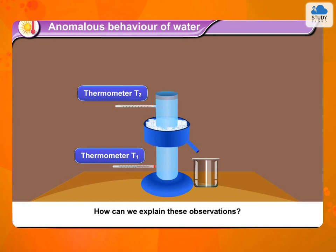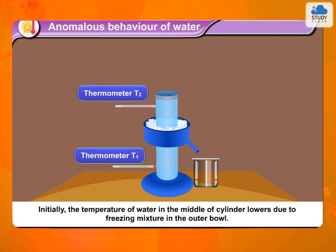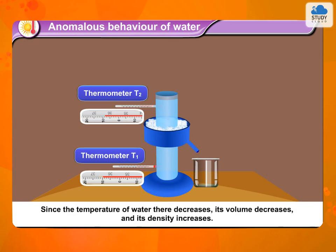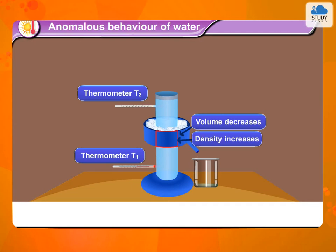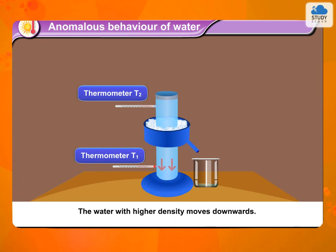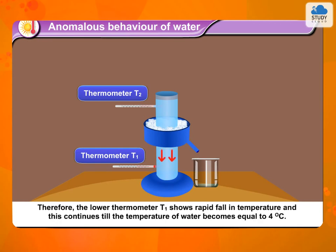How can we explain these observations? Initially, the temperature of water in the middle of the cylinder lowers due to the freezing mixture in the outer bowl. Since the temperature of water there decreases, its volume decreases and its density increases. The water with higher density moves downwards. Therefore, the lower thermometer T1 shows a rapid fall in temperature, and this continues till the temperature of water becomes equal to 4 degree Celsius.